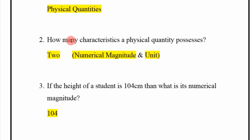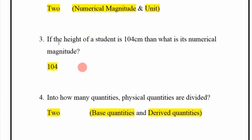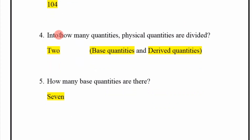If the height of a student is 104 centimeters, then what is its numerical magnitude? 104. Into how many quantities are physical quantities divided? Two: base quantities and derived quantities.